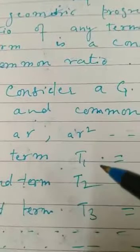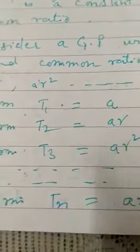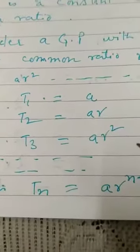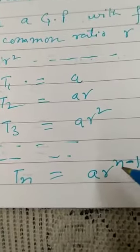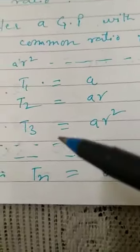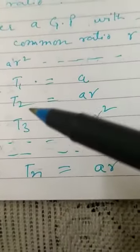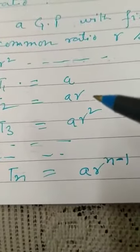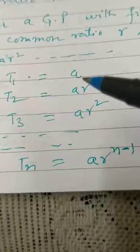The first term T1 is A, the second term T2 is AR, the third term T3 is AR square. Then the nth term TN equals AR to the power n minus 1. The third term has power 2, second term R to the power 1, first term A to the power 0.